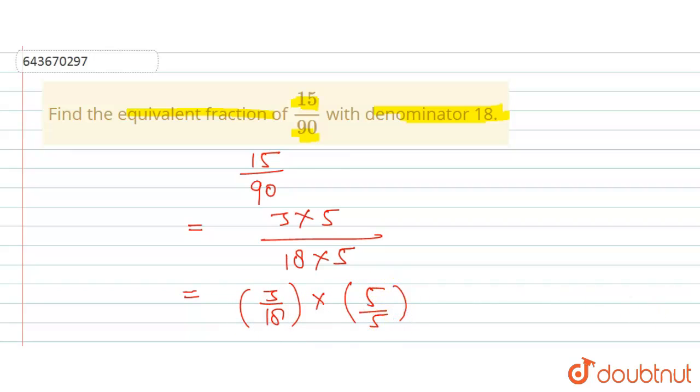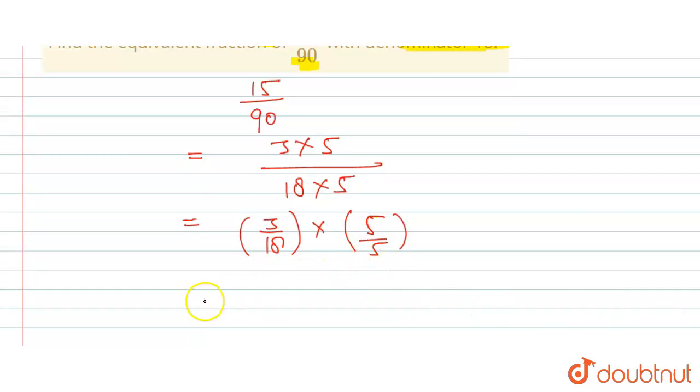can be written as... so 5 will be cancelled out, so here we're only left with the fraction that is 3 upon 18.